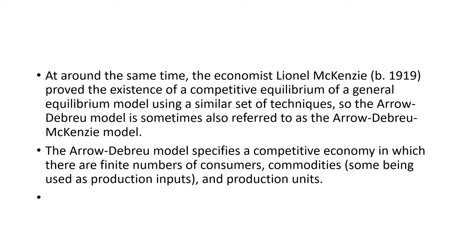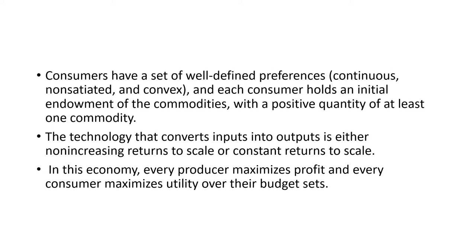The Arrow-Debreu model specifies a competitive economy in which there are a finite number of consumers, commodities, and production units. We know that a Walrasian general equilibrium model is a 2×2×2 model where you have two commodities, two goods, and two inputs, whereas in the Arrow-Debreu model there are finite numbers of consumers, commodities, and production units.